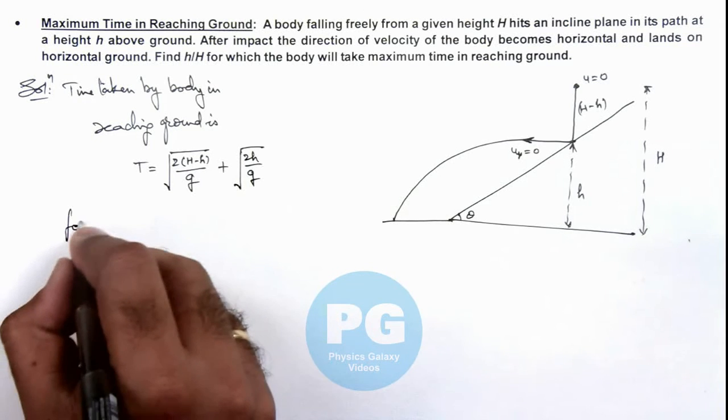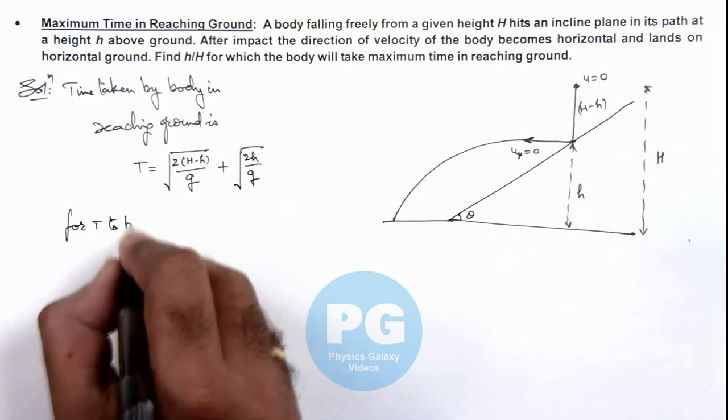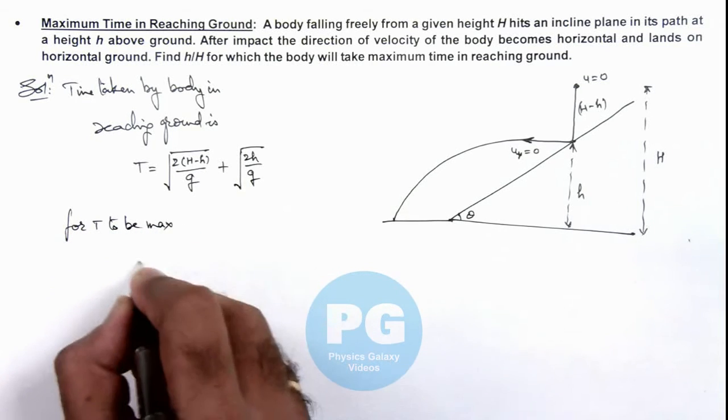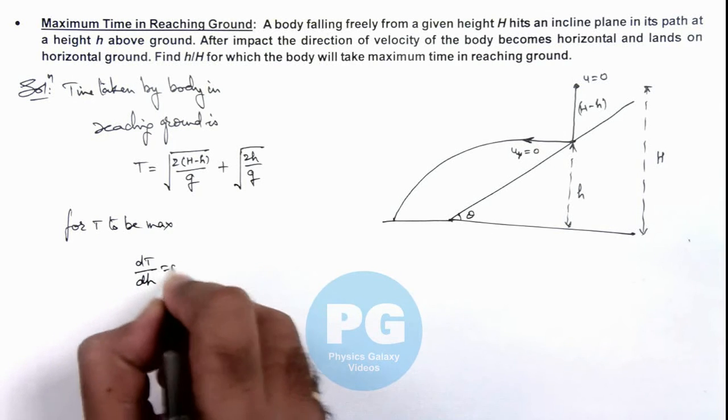For t to be maximum, dt by dh should be equal to zero.